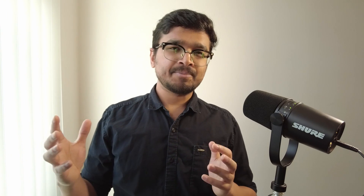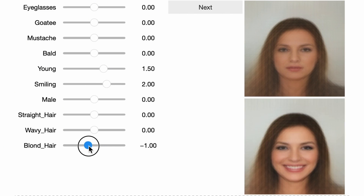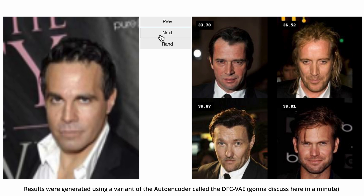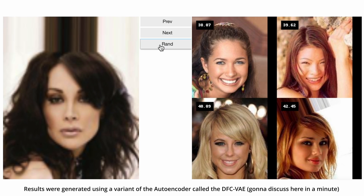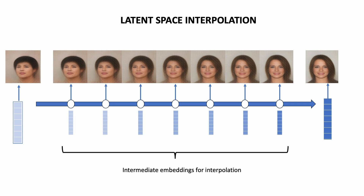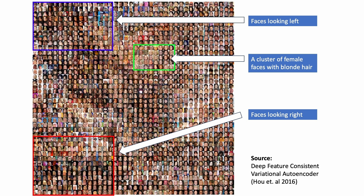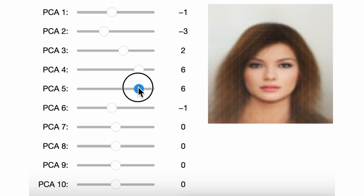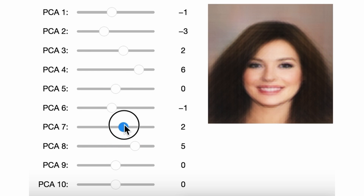The benefits of autoencoders don't just stop at compressing, embedding, and generating new images. We can also find similar images from a database, interpolate between two images by slowly adjusting latent vectors, learn about dominant trends and biases in the data, and even manipulate images — like adding sunglasses or making someone smile.